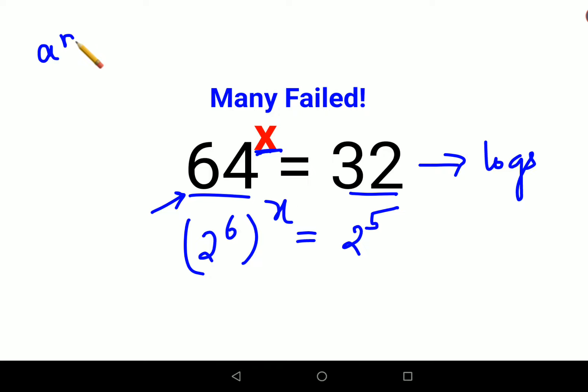Now according to indices law, a raised to m the whole raised to n can be written as a raised to m into n. So this becomes 2 raised to 6 into x, 2 raised to 6x equals to 2 raised to 5. Now since the bases are same I can directly equate the indices.